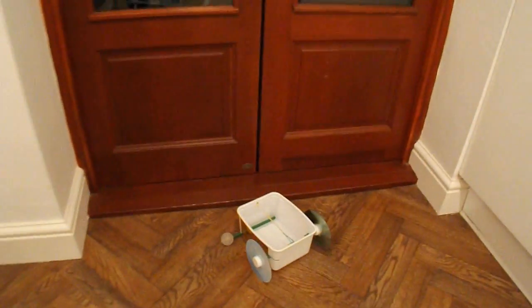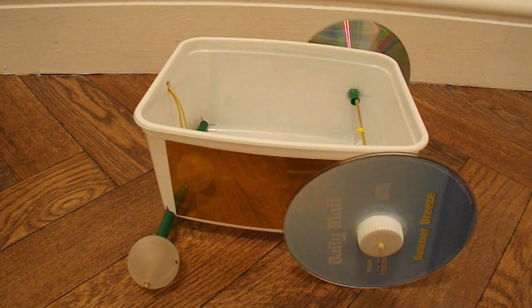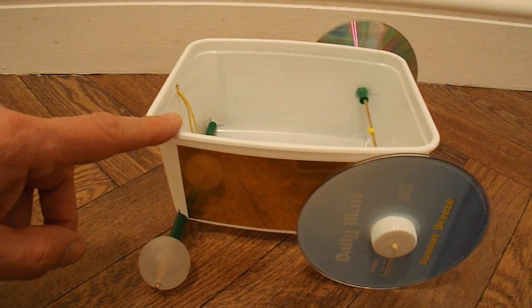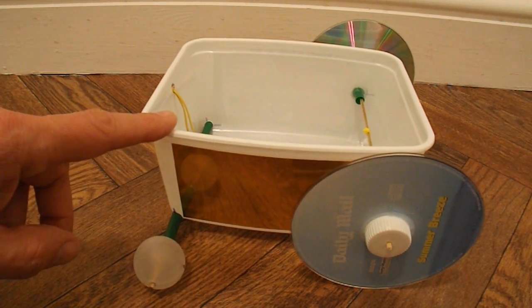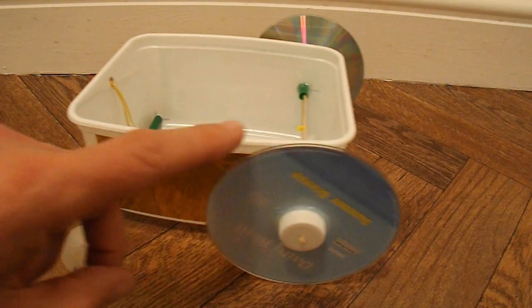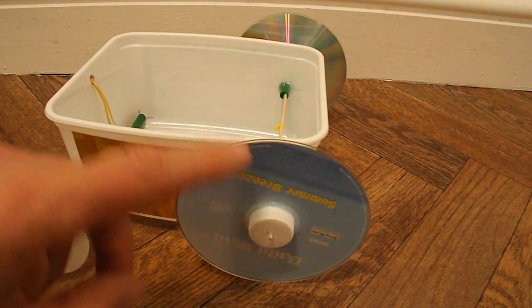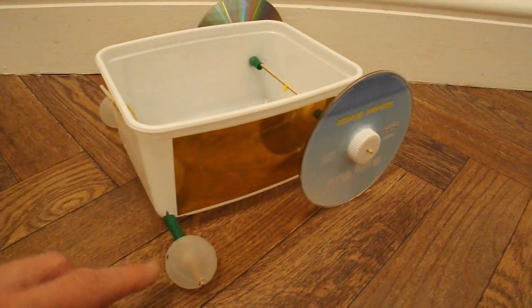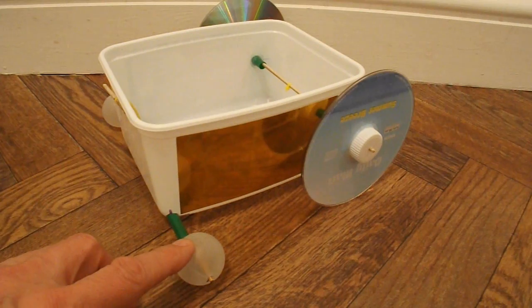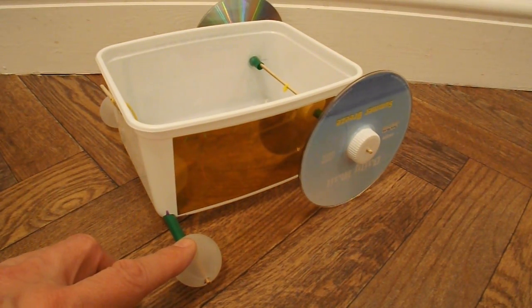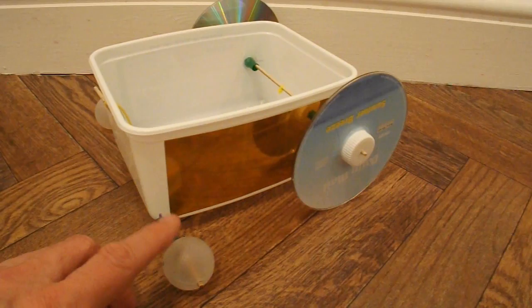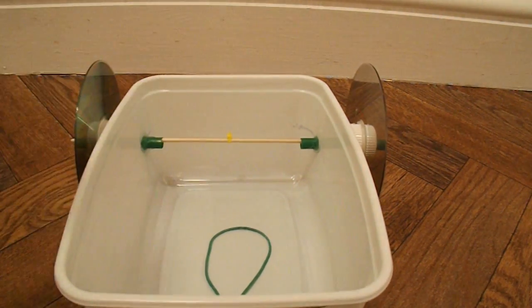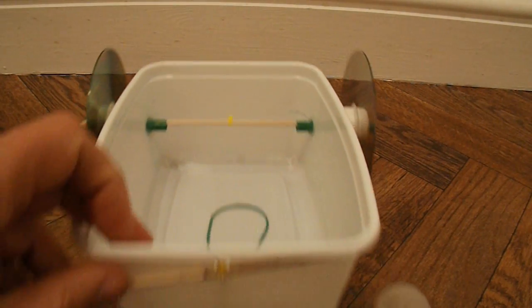Success! There we go, summary time. So what have we got here? Got an ice cream tub, 2 litre I think it was, that's the main chassis. Back wheels are CDs with plastic bottle tops as the hubs. Front wheels are the balls from roll-on underarm deodorant. The axles front and back are just barbecue skewers. There's another bit of barbecue skewer on the front there to hold the rubber band.